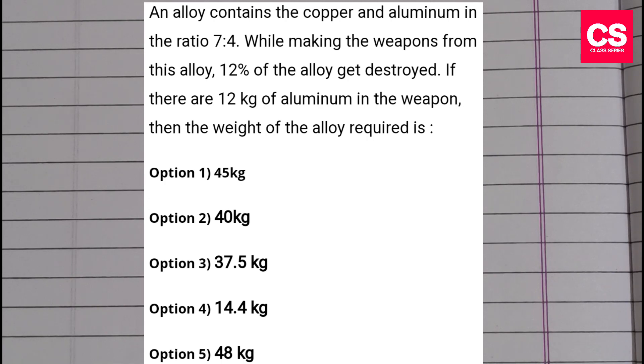An alloy contains copper and aluminum in the ratio 7:4. While making weapons from this alloy, 12% of the alloy gets destroyed. If there are 12 kg of aluminum in the weapon, then the weight of the alloy required is: